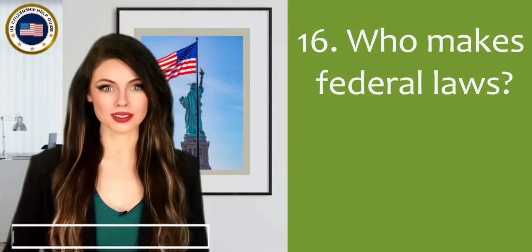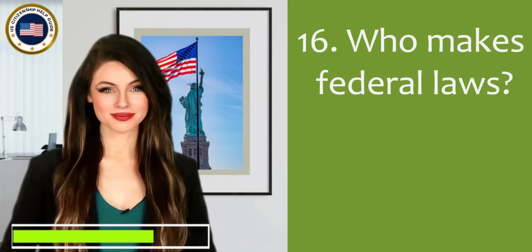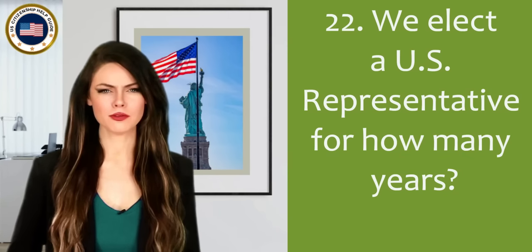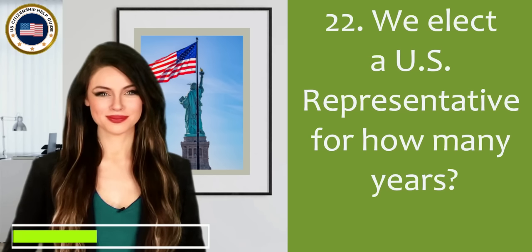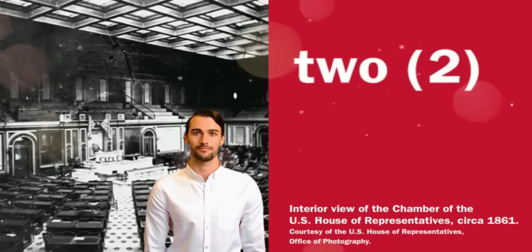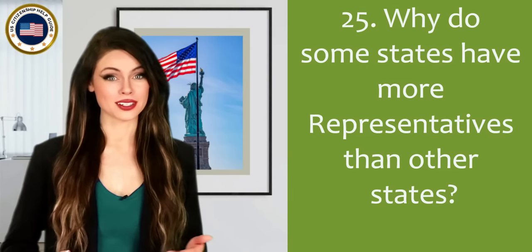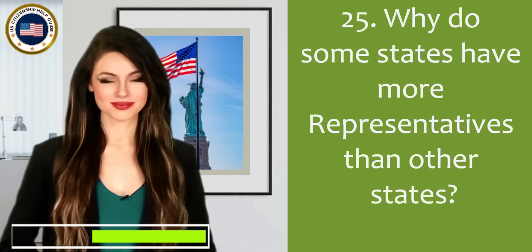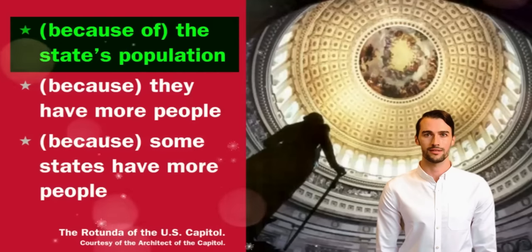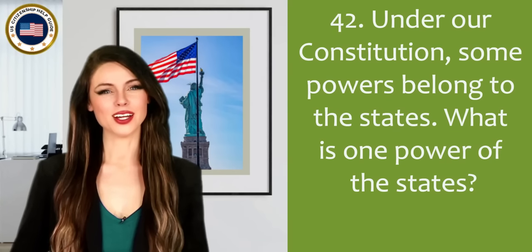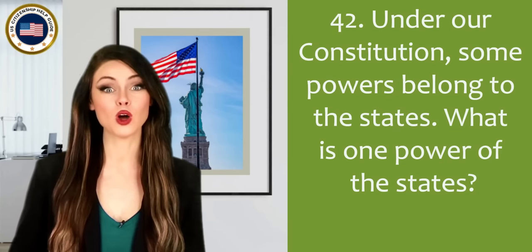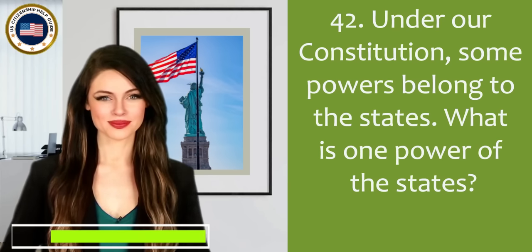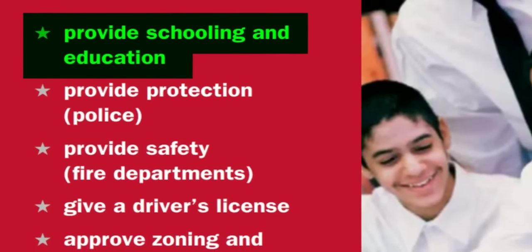Who makes federal laws? Congress. We elect a U.S. representative for how many years? Two. Why do some states have more representatives than other states? Because of the state's population. Under our Constitution, some powers belong to the states. What is one power of the states? Provide schooling and education.